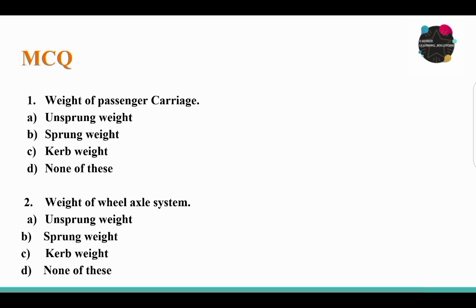MCQ question: The weight of the passenger carriage is known as — Option A: unsprung weight, Option B: sprung weight, Option C: curve weight. The answer is Option B, sprung weight. The weight of the wheel axle system is unsprung weight.